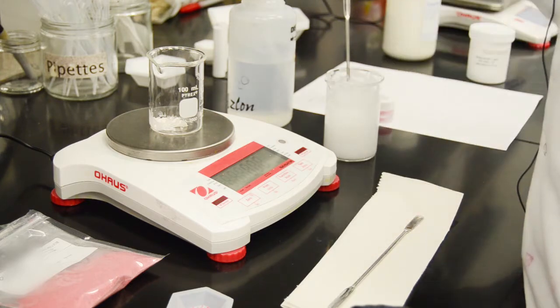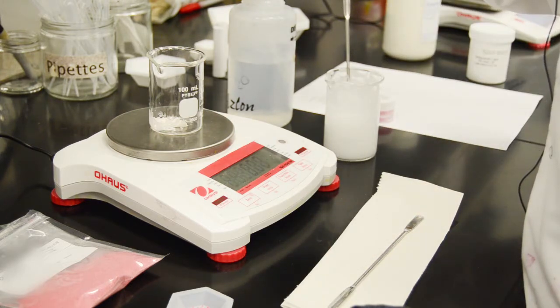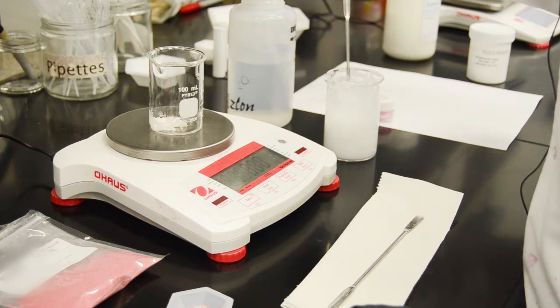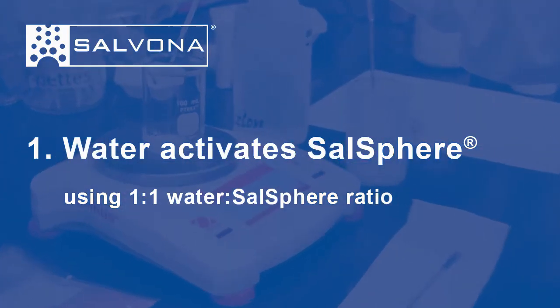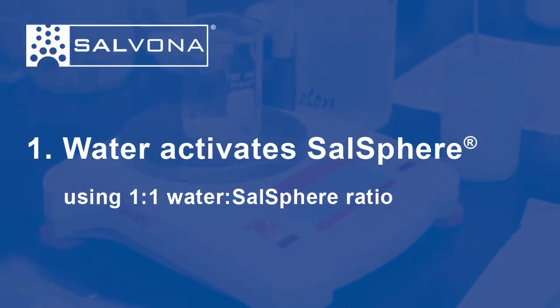Formulating with salosphere light is very simple. First you want to add water to the salosphere to activate it. I'm adding one gram of water to the one gram of salosphere that I already pre-weighed.